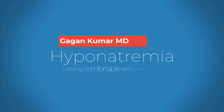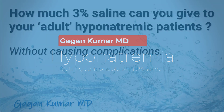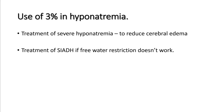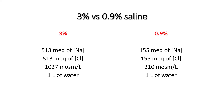Hello everyone. Today we'll be talking about hypertonic saline in hyponatremic patients. We'll do some basic calculations to figure out how much 3% saline you need for your patient for a given correction. 3% saline is mostly used in treatment of severe hyponatremia to reduce cerebral edema, and it's also used for treatment of SIADH if free water restriction doesn't work. 3% saline contains around 513 mEq of sodium and 513 mEq of chloride, and the osmolality of the solution is 1027.